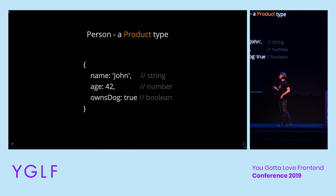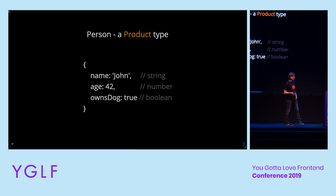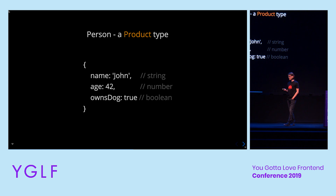This is an example in JavaScript. A product type — a person — which is an object. It is composed out of three simple types: a string, a number, and a boolean.